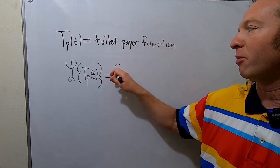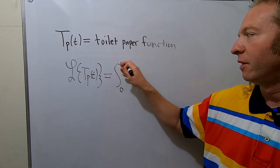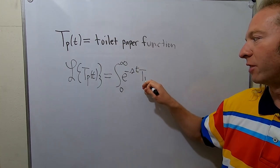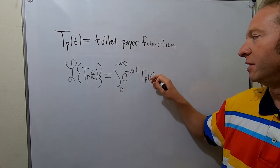This is equal to the improper integral from zero to infinity of e to the negative st times our toilet paper function, T sub P of T dt.